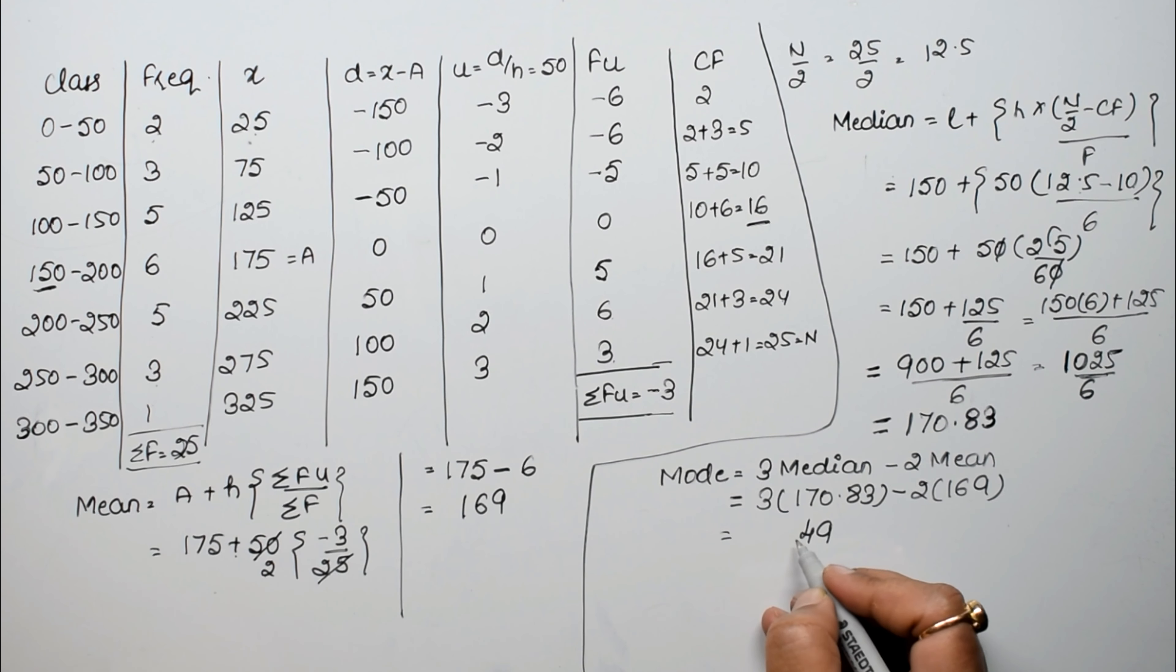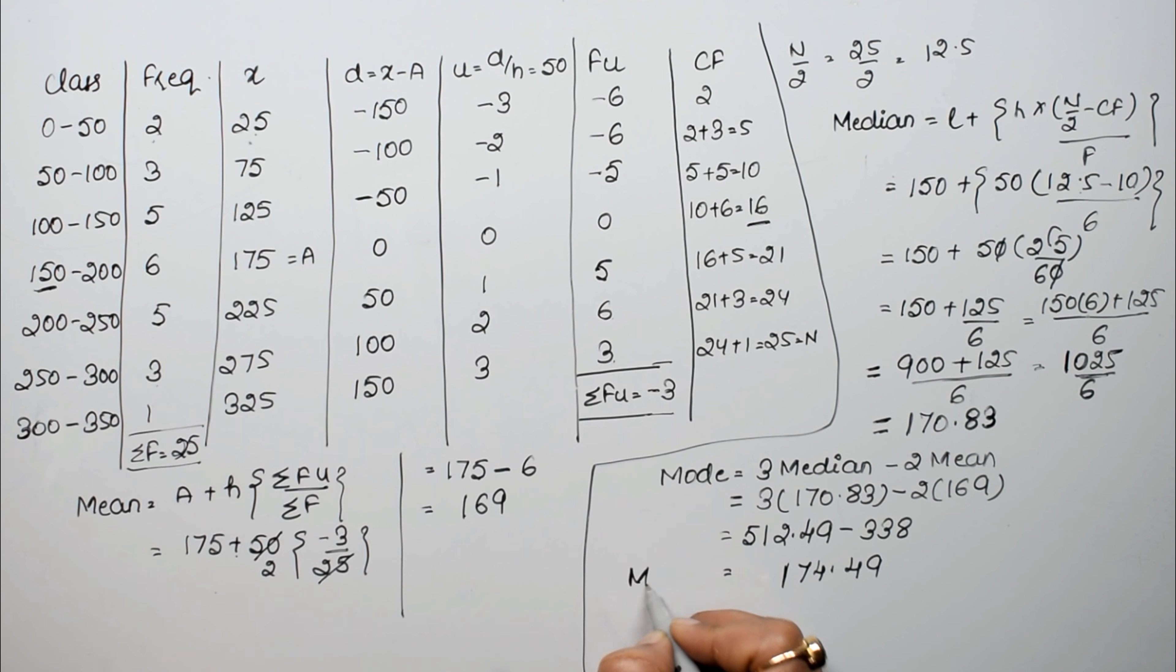So see, 3 threes are 9, 3 eights are 24, point came, 2 came, 21, 2 carry, 3 ones are 3, 4, 5, minus 2 nines are 18 carry 1, 12, 13 carry 1, 2 ones are 2 and 3. So this is 0.49 as it is, 12 minus 8 is 4, 10 minus 3 is 7, and 4 minus 3 is 1. So mode came as 174.49, that is the answer.